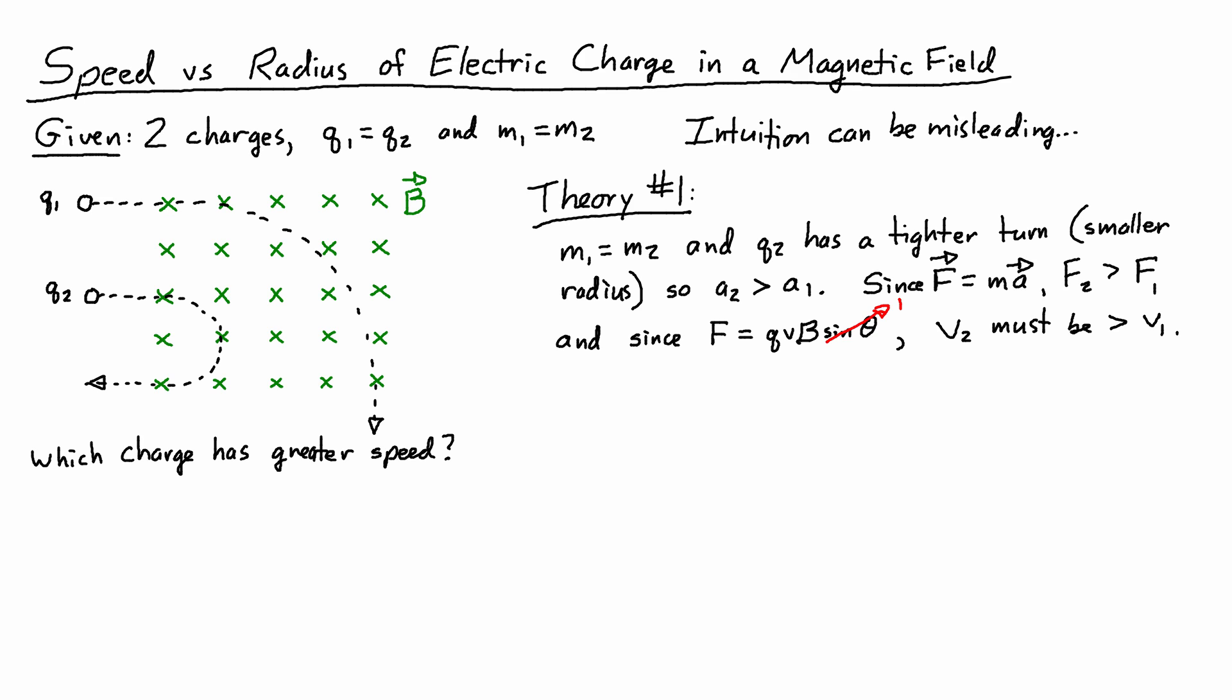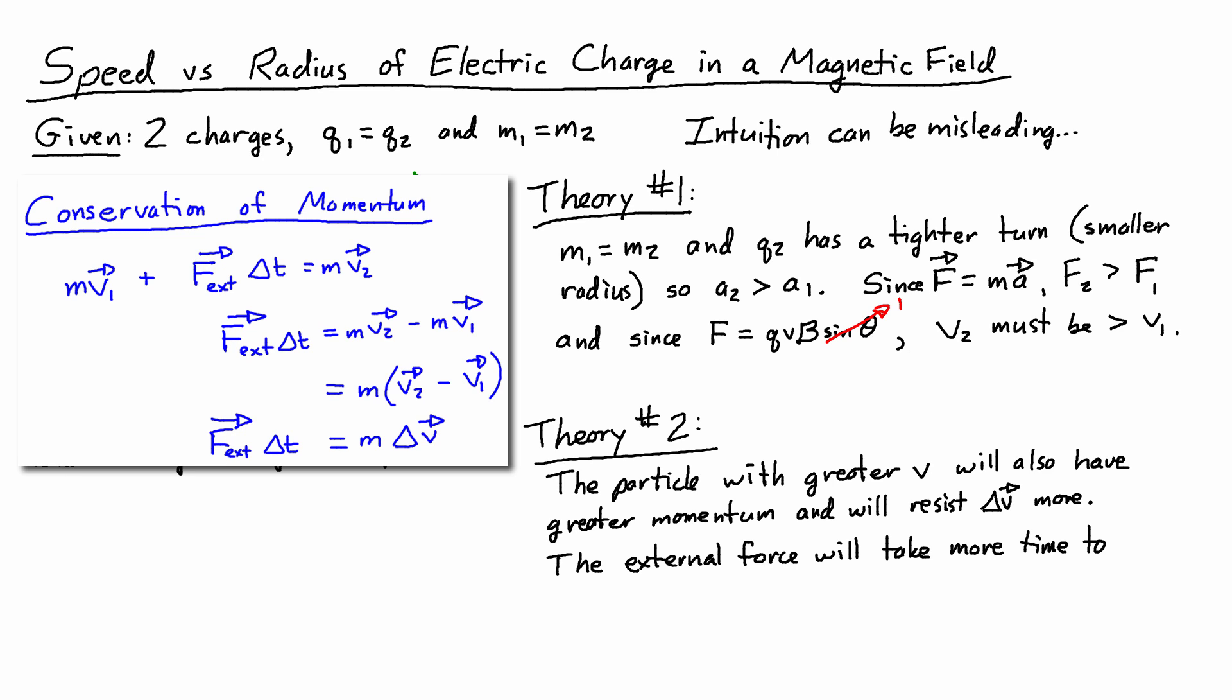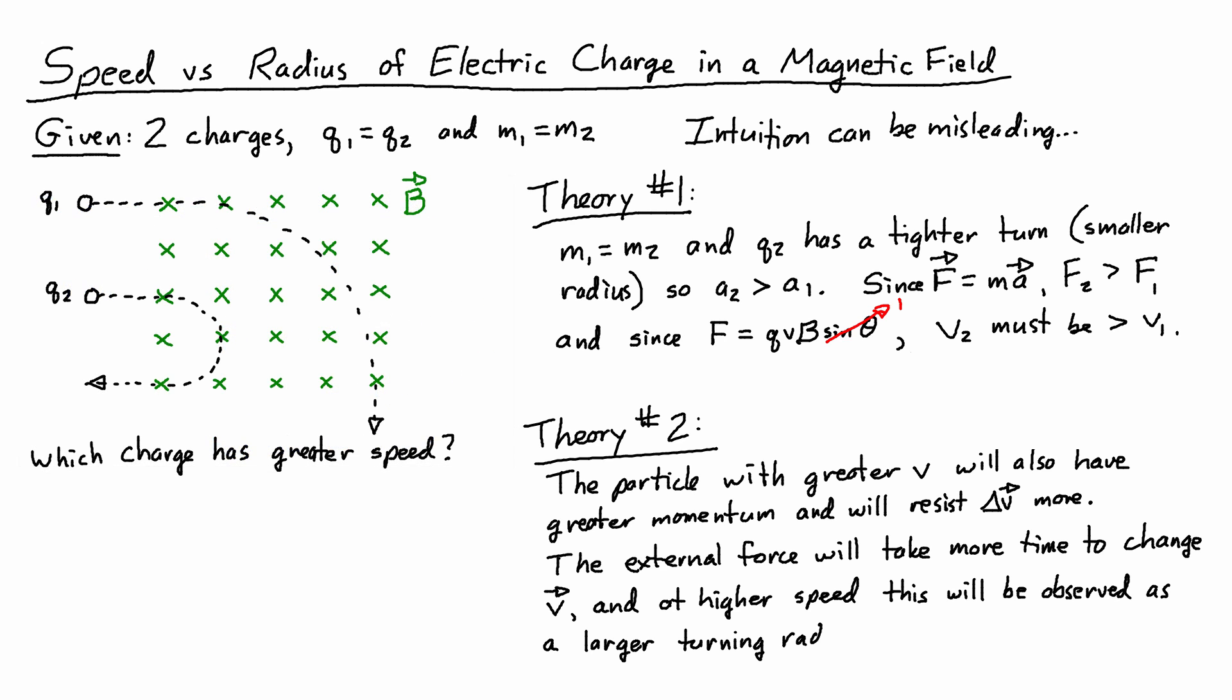Alright, so you're probably guessing I wrote theory number 1 on there. Here's another theory. The particle with greater speed will also have greater momentum and will resist a change in velocity more. As a quick reminder, from conservation of momentum we get mv1 plus the external impulse, which is external force times delta t, equals mv2. If I isolate the impulse by subtracting mv1 from both sides, I can see it's m times delta v. Basically the particle with greater speed will also have greater momentum, and from conservation of momentum we know that a change in delta v requires a force applied over time. Therefore the external force, which in this case is the magnetic force, will take more time to change the velocity, and at a higher speed this will be observed as a larger turning radius. Therefore v1 must be greater than v2.